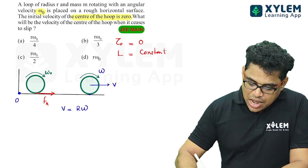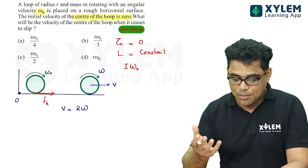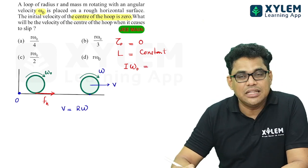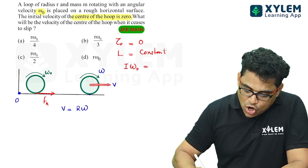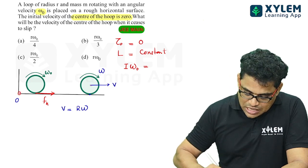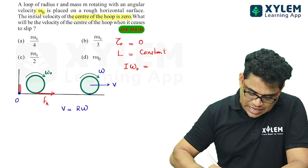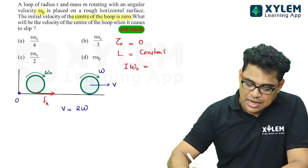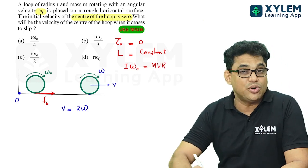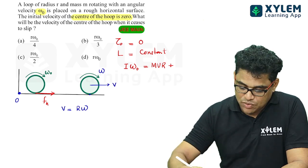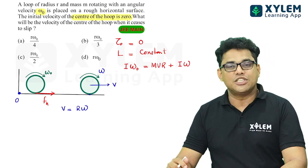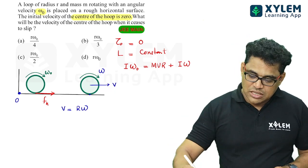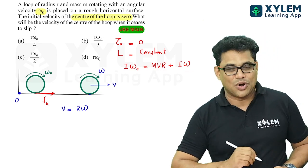The initial angular momentum about O is I*omega_0 — only rotational angular momentum, because the center of mass linear velocity is zero initially, so there is no translational part. After pure rolling starts, the angular momentum about O equals the angular momentum of the center of mass, which is M*V*r (where r is the perpendicular distance from O to the line of linear momentum), plus the angular momentum about the center of mass, which is I*omega.